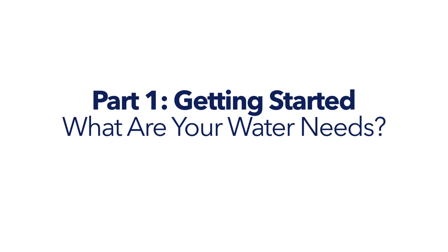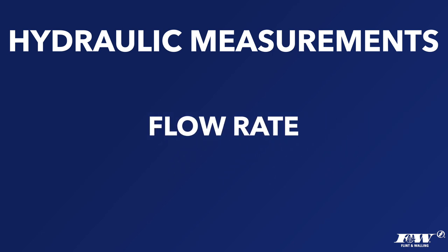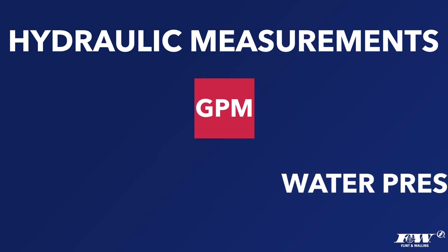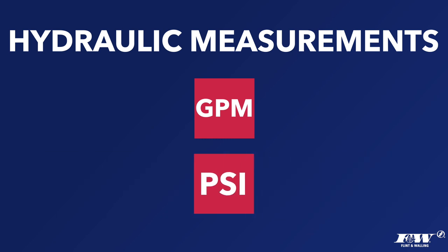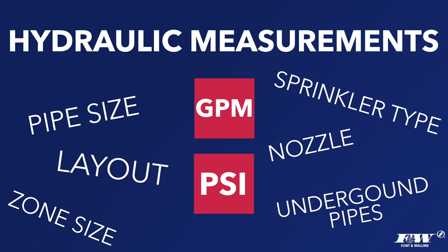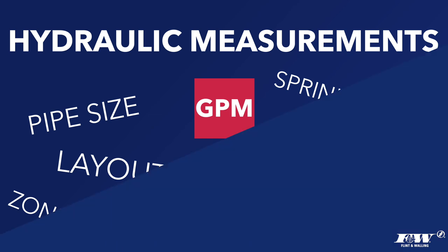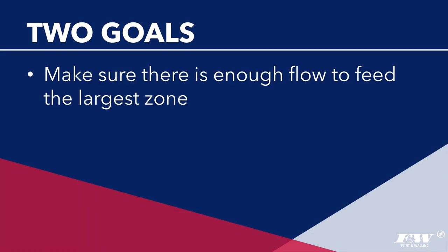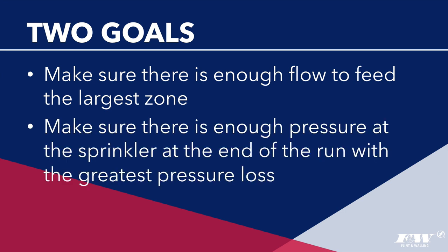In any introduction to irrigation design, installation, or service, you learn that there are two hydraulic measurements that matter: the flow rate in gallons per minute (GPM) and the water pressure in pounds per square inch (PSI). Pipe size, sprinkler type and nozzles, zone size, and even the layout and arrangement of pipe underground all depend on these two things. All of the decisions you make are directed towards two goals: making sure there is enough flow (GPM) to feed the largest zone, and enough pressure (PSI) at the sprinkler at the end of the run with the greatest pressure loss.